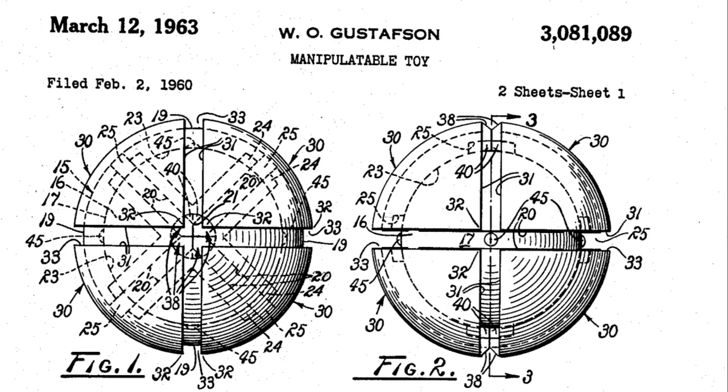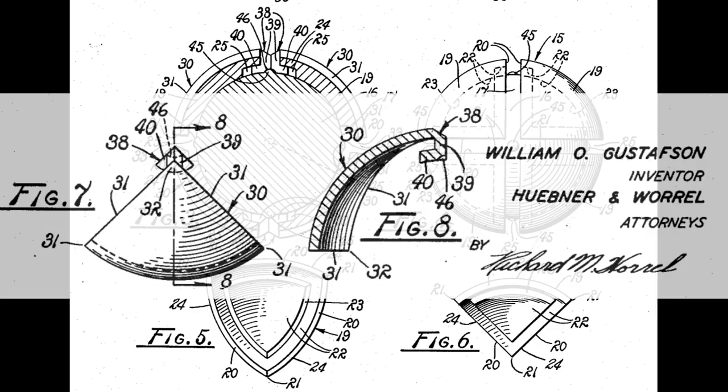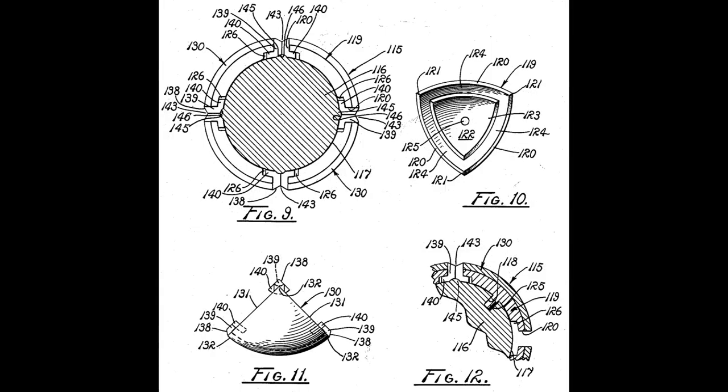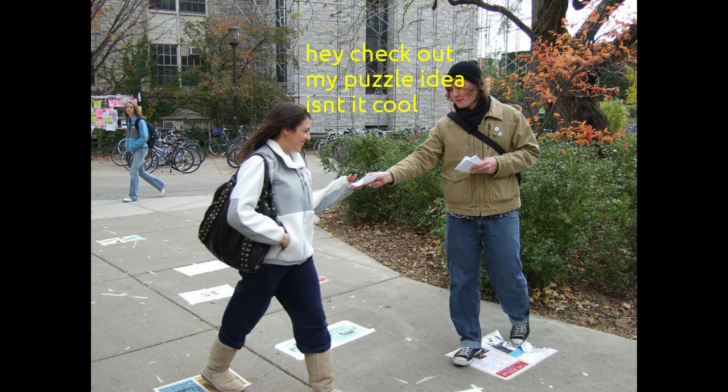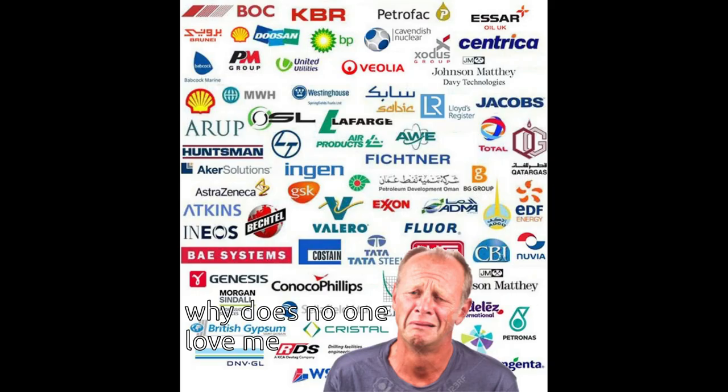It was spherical and used a mechanism where pieces hooked onto a central sphere to move the pieces around. However, when he tried to market the puzzle, he was rejected by 80 different companies.